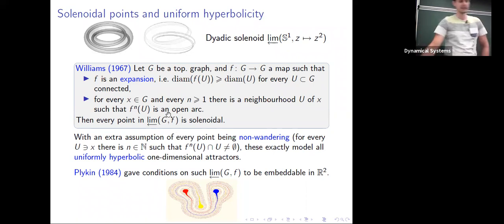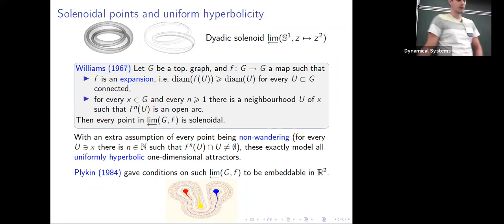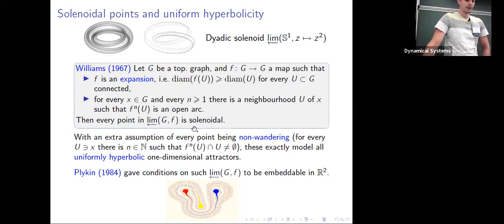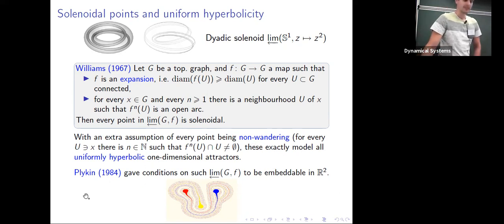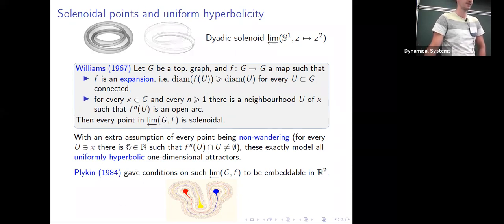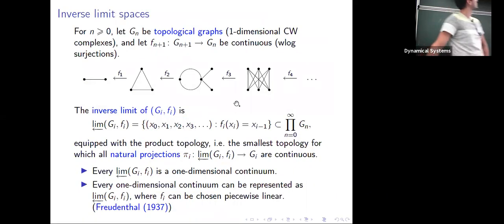With an extra assumption that every point is non-wandering, Williams showed that these inverse limits exactly model all uniformly hyperbolic one-dimensional attractors. Additionally, Flicking gave conditions so that the inverse limit is embeddable in the plane. The solenoid by contrast is not embeddable.